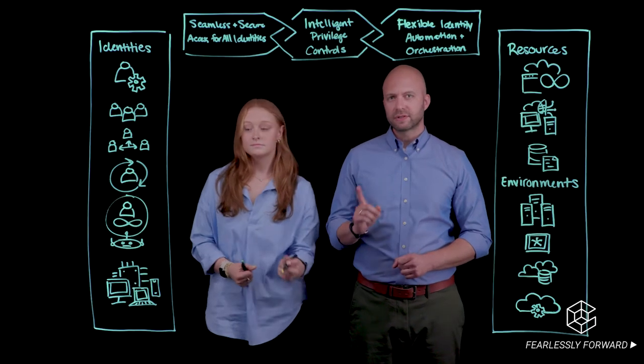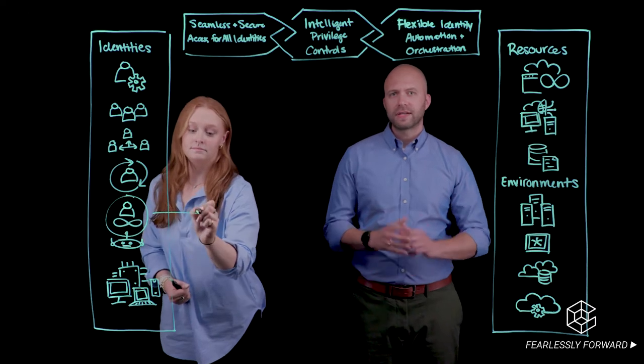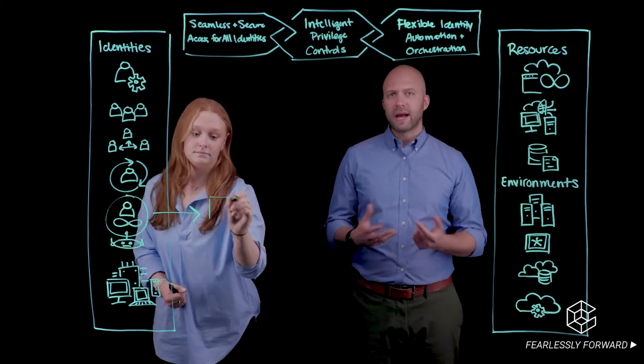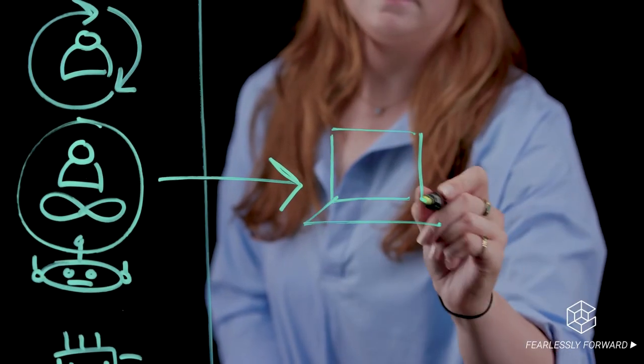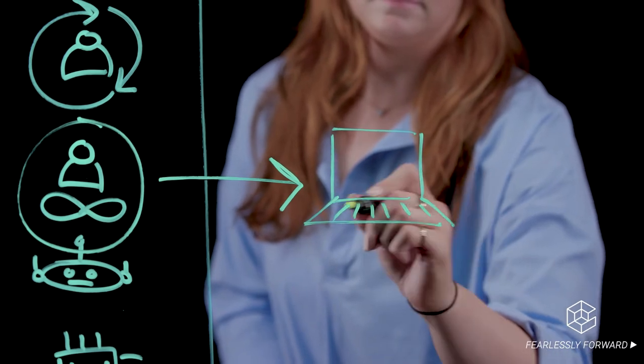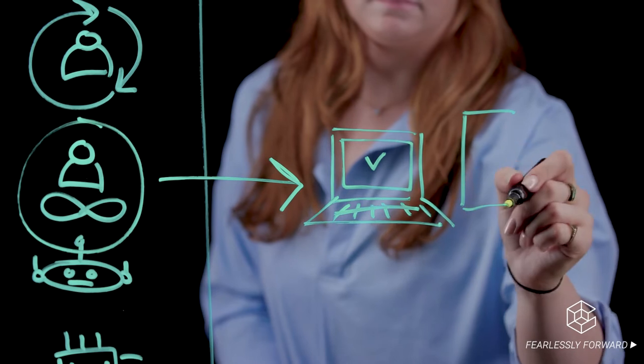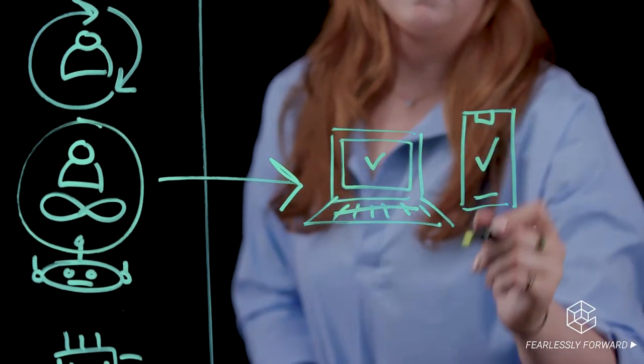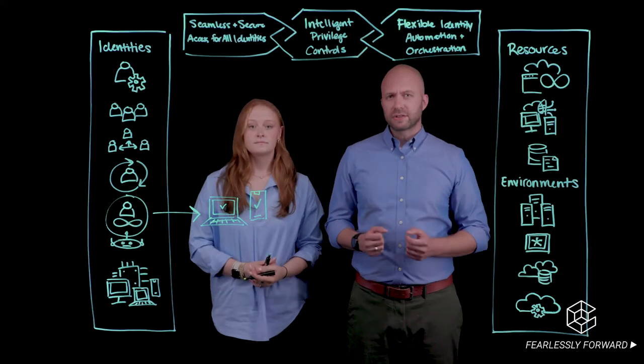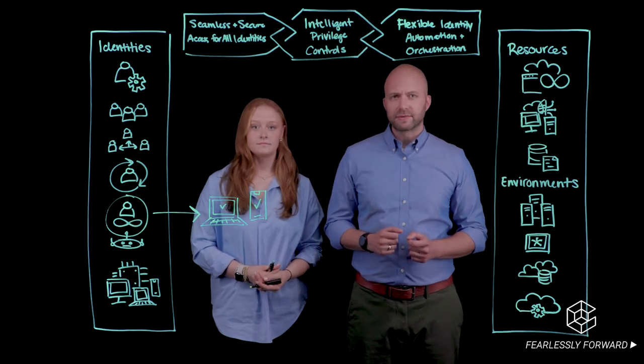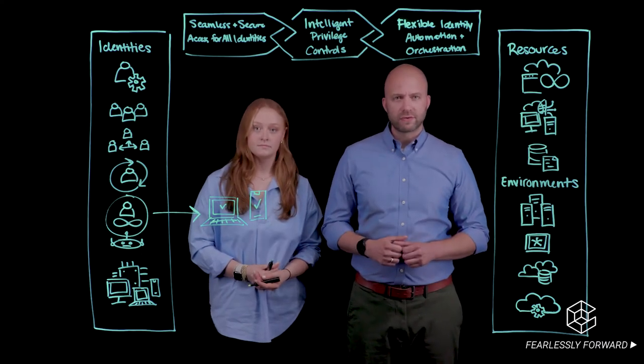First order of business? Seamless, secure access. Let's get Rachel into her laptop using an adaptive form of multi-factor authentication. Okay, she's knocking at the door, and we'll compare that knock with historical data on Rachel's typical user activity. Not only will this help us ensure that Rachel is indeed Rachel, but if we see anything suspicious, like multiple failed login attempts, we can prompt for additional authentication factors.